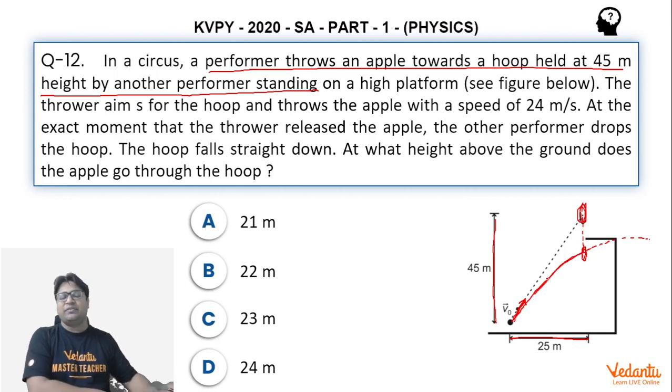This is a very common example. There is one such question in the very popular book Concepts of Physics Part 1 by H.C. Verma where a monkey was climbing a tree trunk and the monkey releases the tree trunk, and at the same time a hunter fires a bullet towards the monkey and the bullet still hits the monkey.